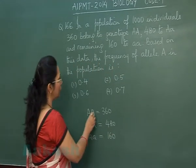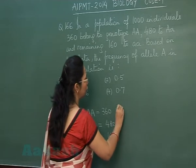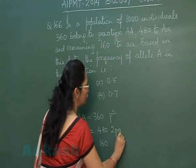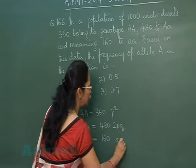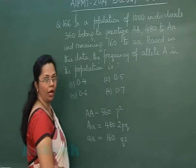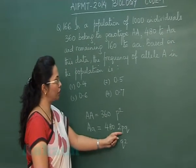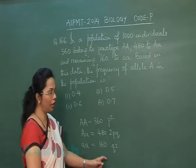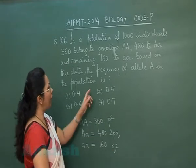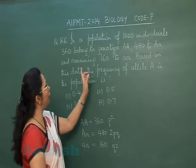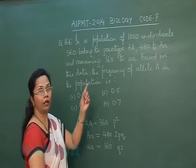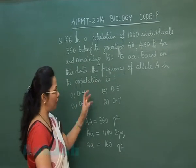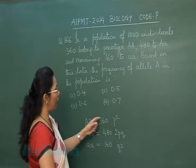Here, 360 represents p², 480 represents 2pq, and 160 represents q². We know that p² + 2pq + q² = 1. In this case, we have to find the frequency of allele A, the dominant allele, in the population.